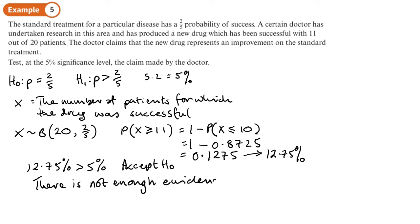We normally use this phrasing about not enough evidence. If you do further statistics you'll find out why we use that phrase about evidence, because it's not actually 100% proof that it is or isn't working. So there's not enough evidence to suggest that the new drug is any more successful than the old one.